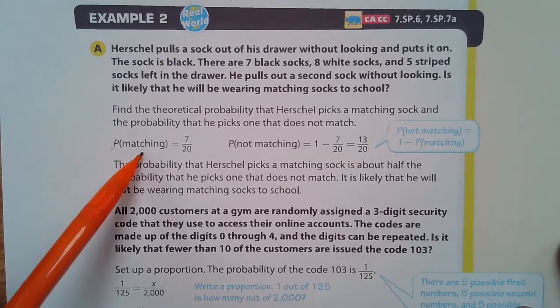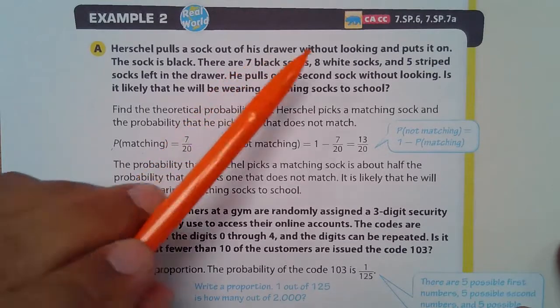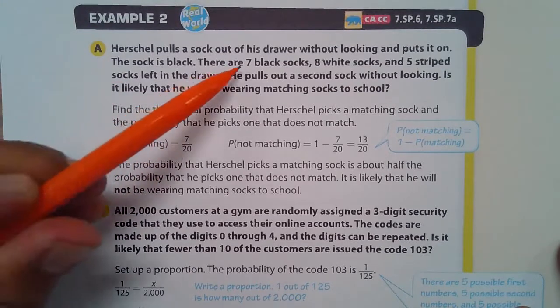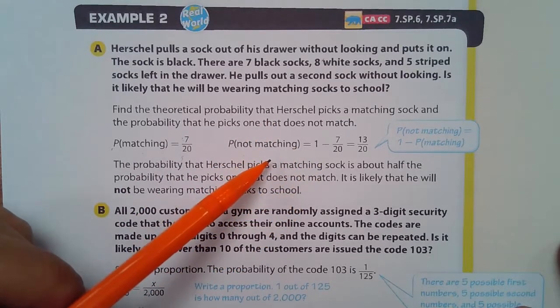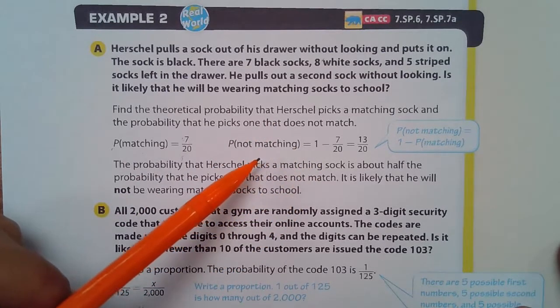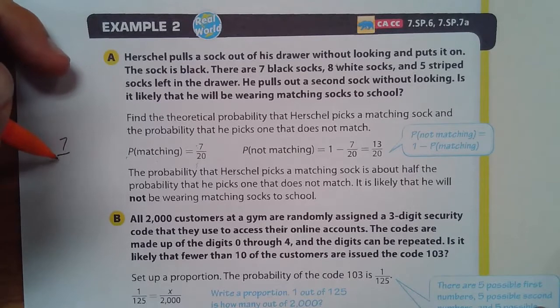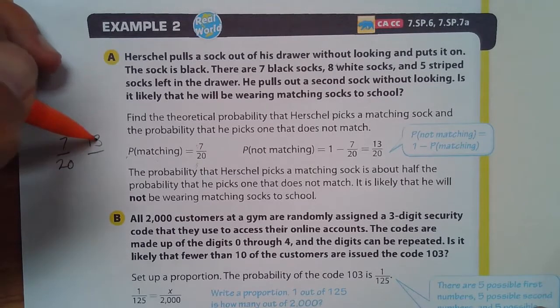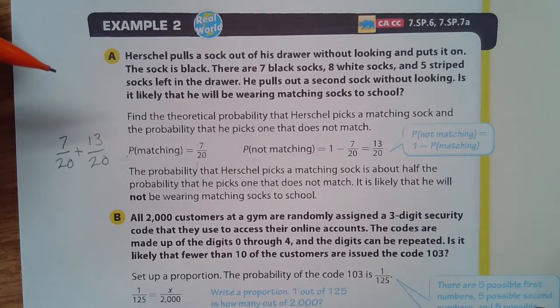So the probability of getting a matching sock, there's seven out of the 20. If we add seven plus eight plus five, that is 20. So matching, there are seven of the 20 not matching. Well, that's our complement. Remember, the complement is everything that's not that. So I think of it as seven out of 20 are matching and the other 13 are not because seven plus 13 gives you all 20 of the socks in our sample space. And that equals one.